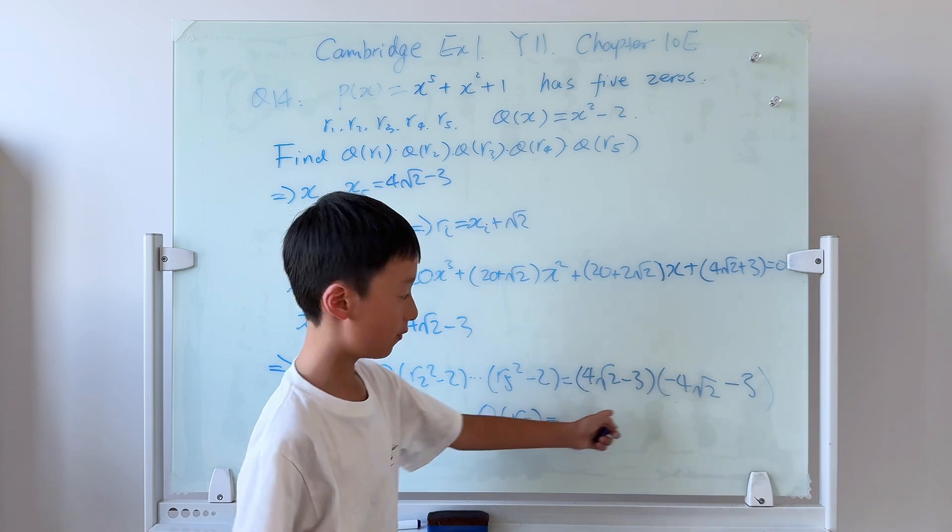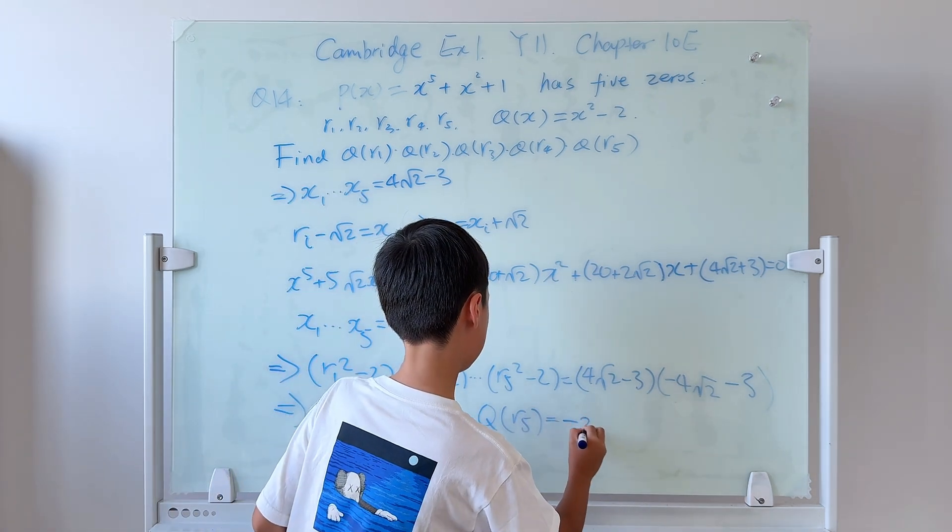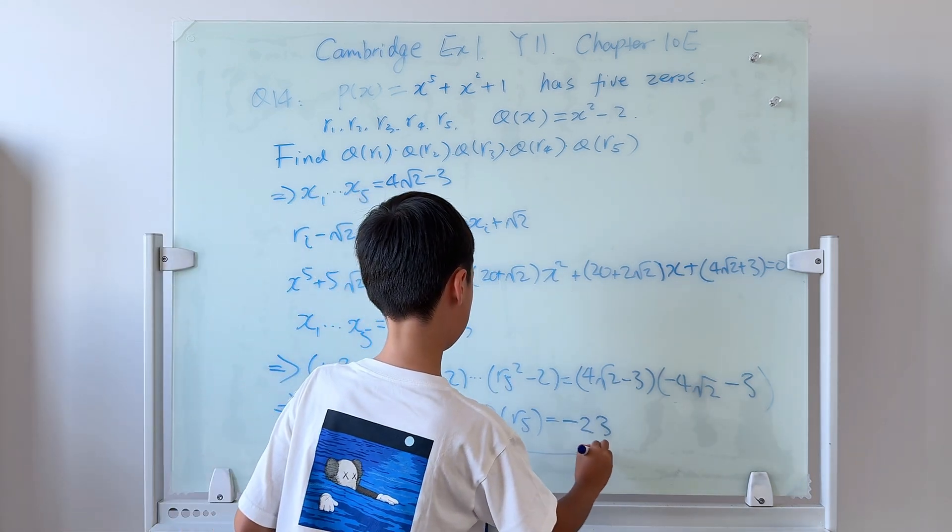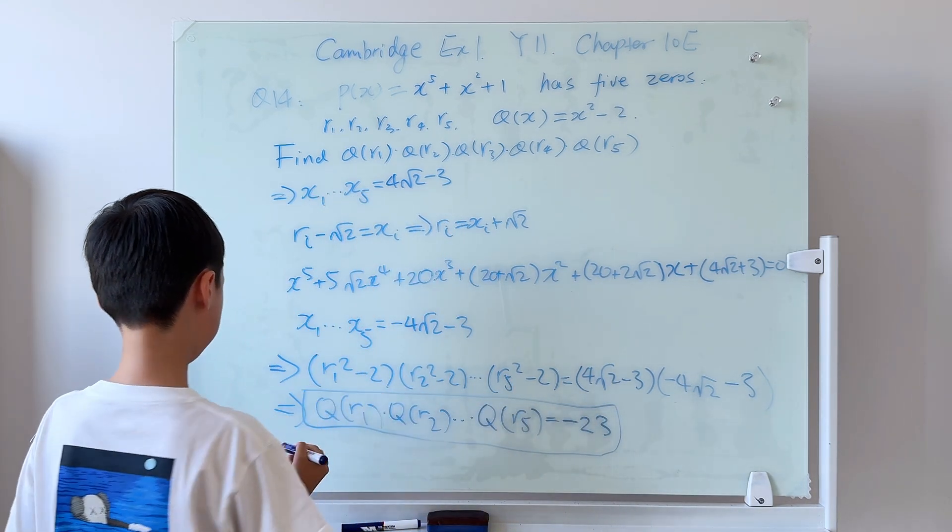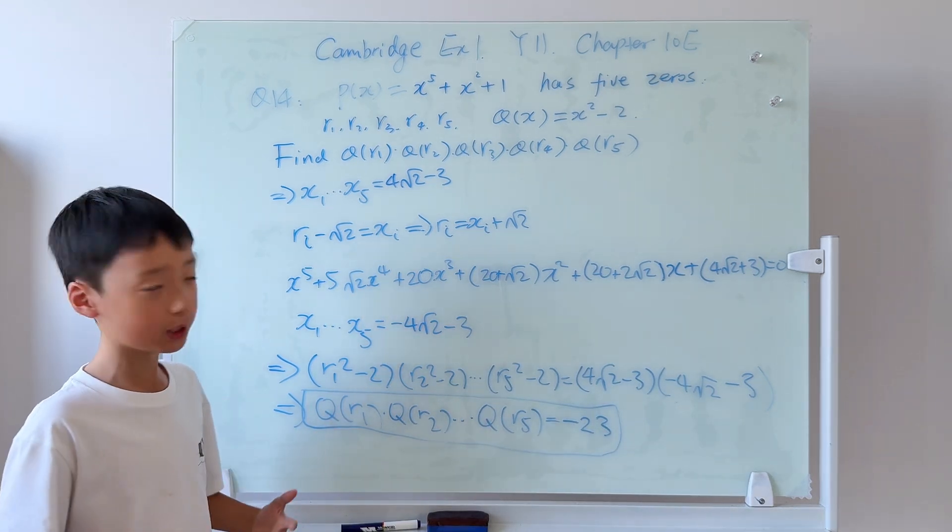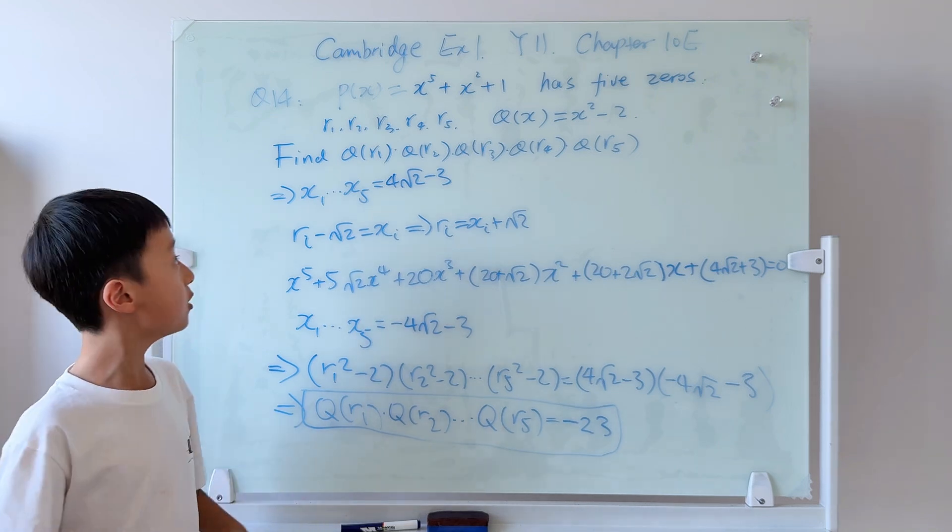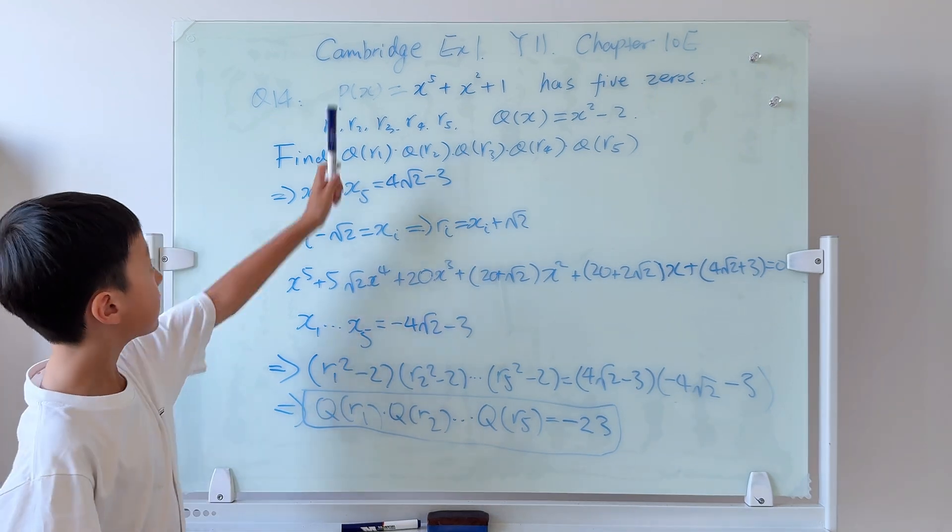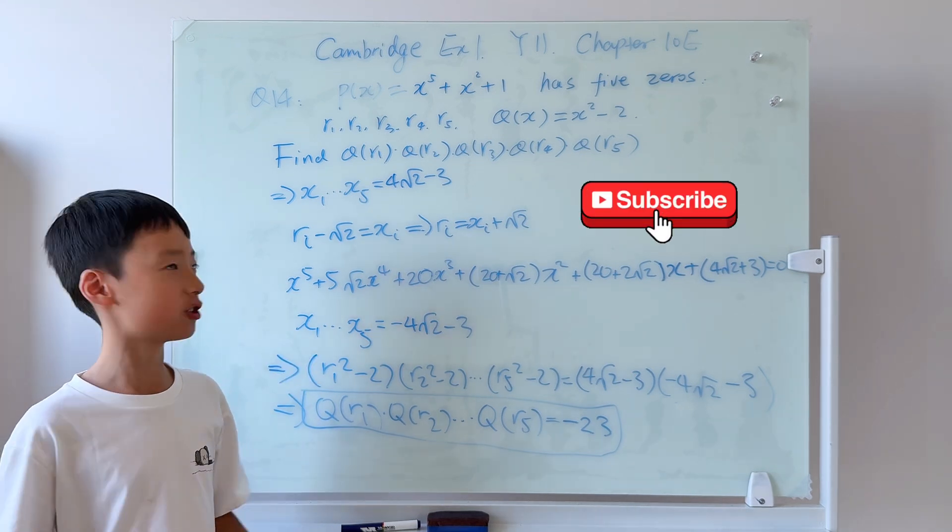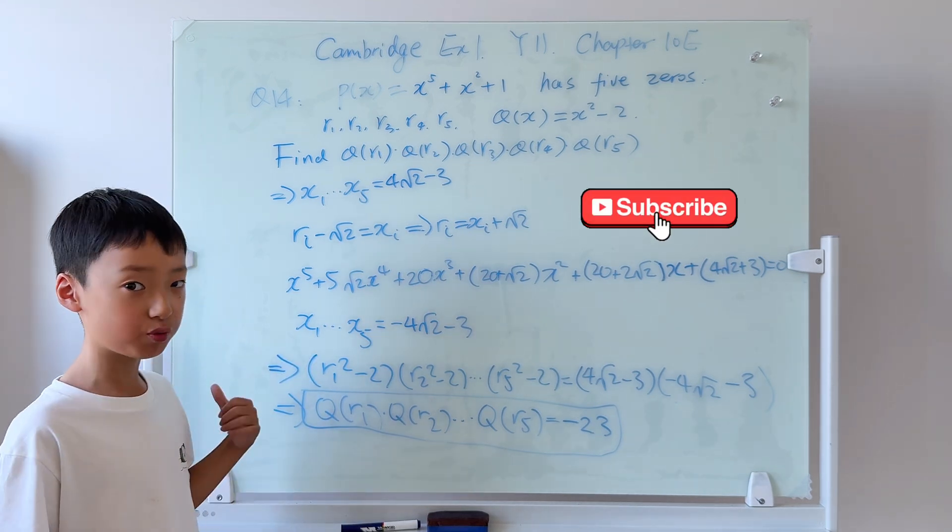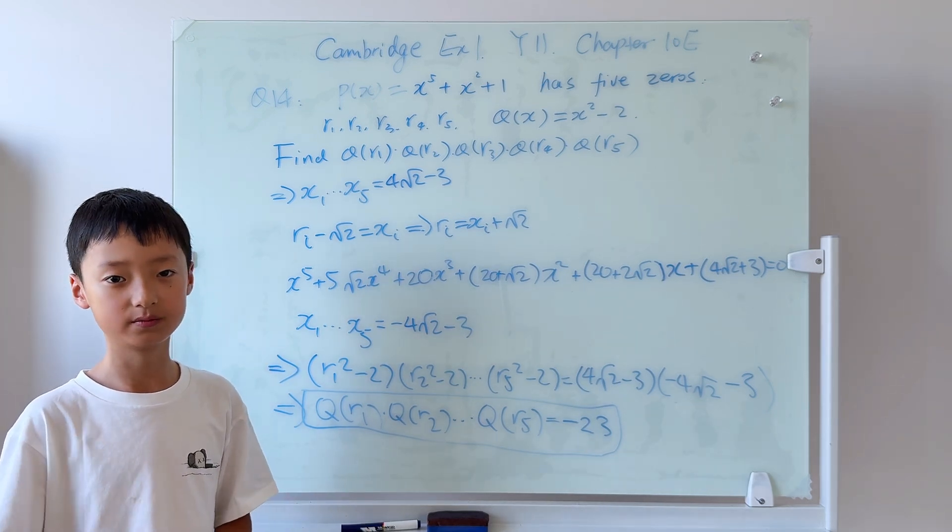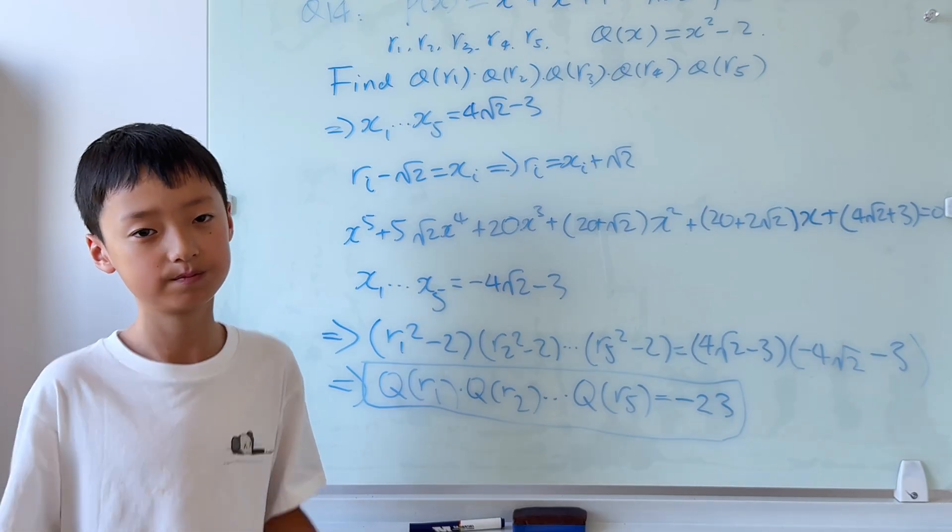It equals 2. If you unpack this by yourself, it becomes negative 23. So this is the final answer of the interesting polynomial question that I found in the Cambridge Year 11 Extension 1 chapter 10E. Thank you guys so much for watching this video. If you liked my previous video and you liked this video, please consider liking and subscribing. If you want to master something, teach it.